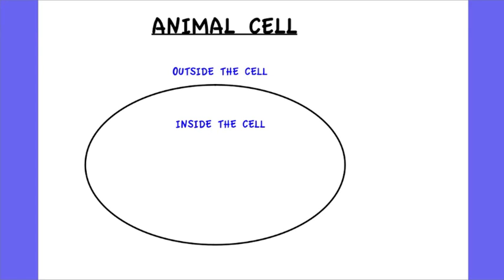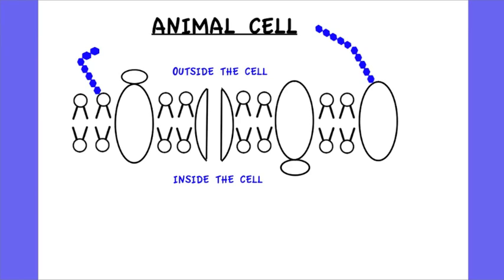So now let's have a look at the animal cells. So remember that an animal cell does not have a cellulose cell wall. However, it does have a cell membrane. So let's zoom in on that and have a look at the cell membrane.